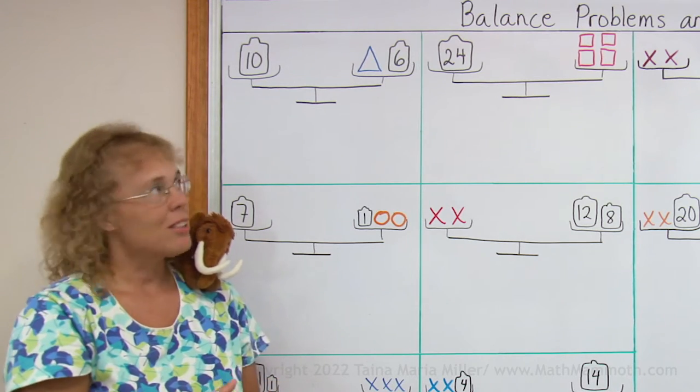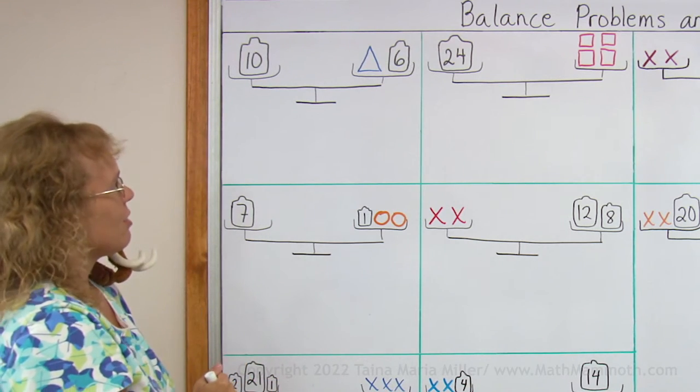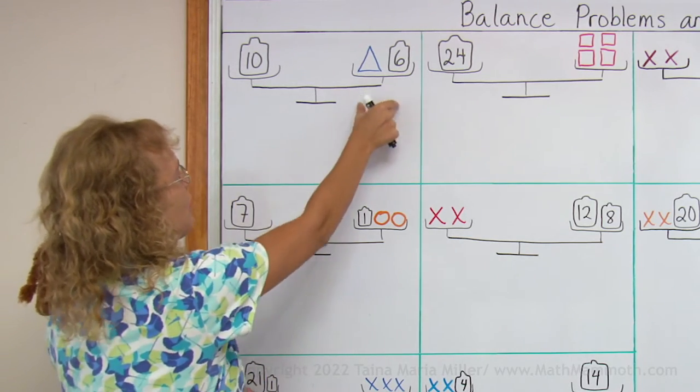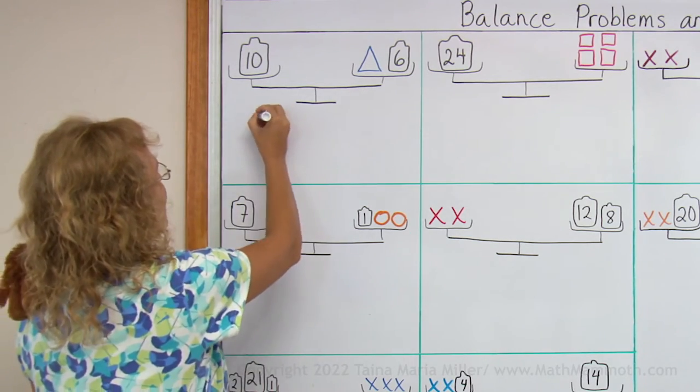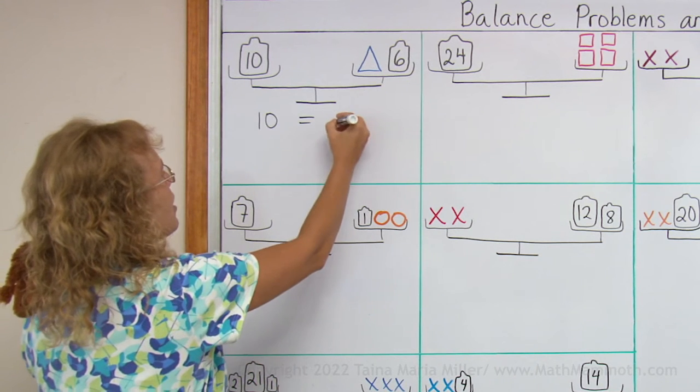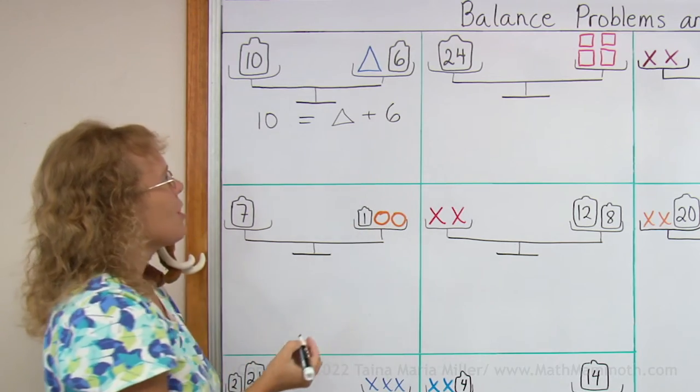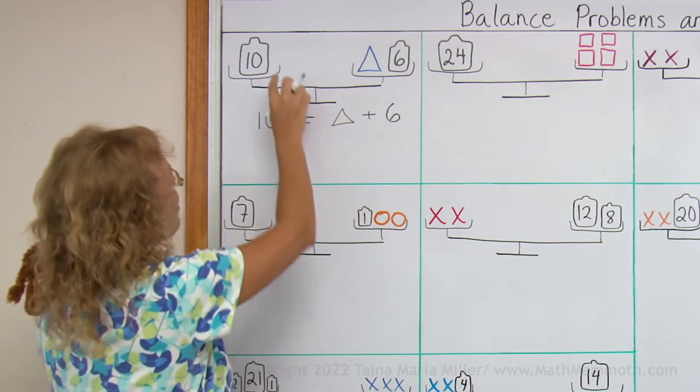And now we're going to write a little equation from this balanced situation. Basically this weight equals that weight. So I can write 10 equals this triangle plus 6. You can think of these as weights, 6 kilograms, 10 kilograms.